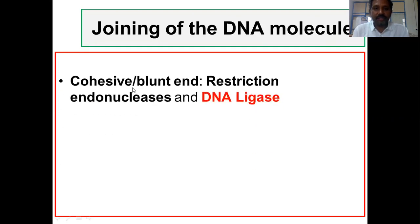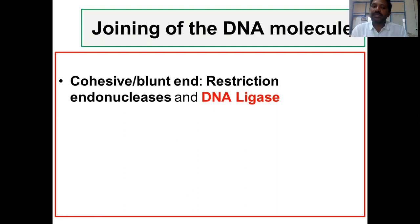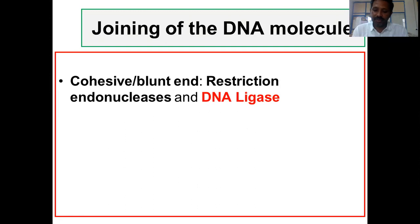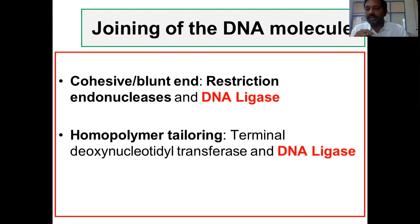The first method is cohesive or blunt end DNA fragments. These fragments are generated by digestion with restriction endonucleases. Once they are generated through restriction digestion, they can be ligated with the help of an enzyme called DNA ligase.